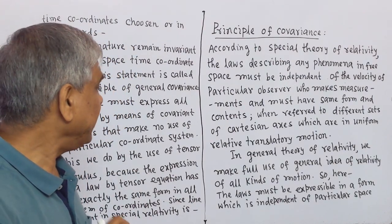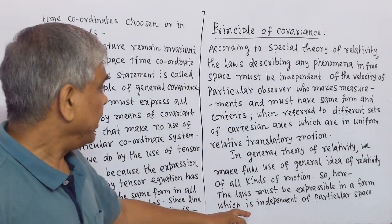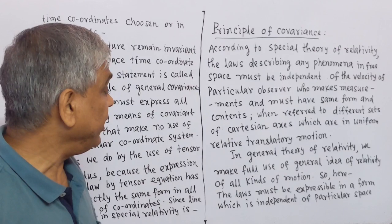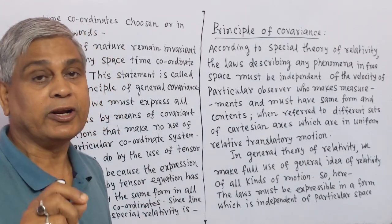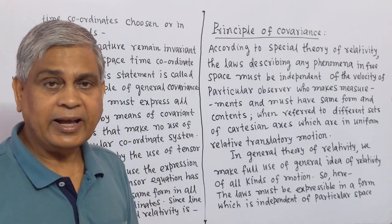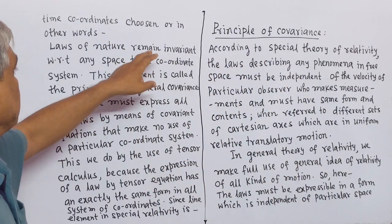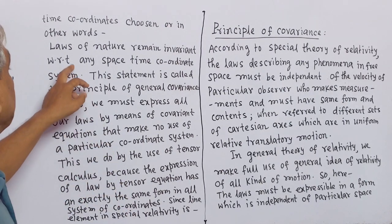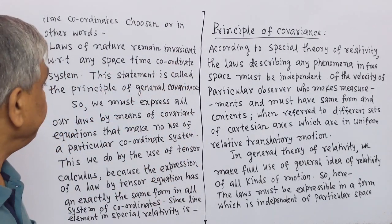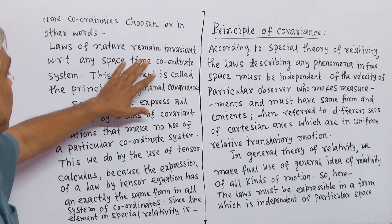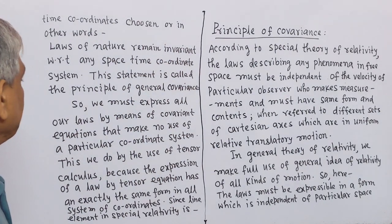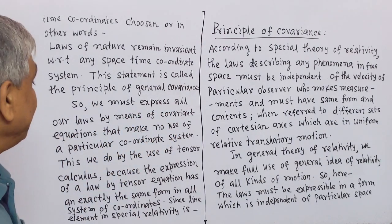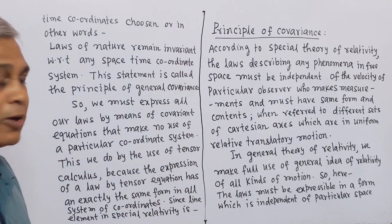Here we take all kinds of motion, and for all kinds of motion, the laws must be expressible in a form which is independent of the particular space-time coordinate system. The idea is broadened. In other words, laws of nature remain invariant with respect to any space-time coordinate system. This statement is called the Principle of General Covariance. We must express all our laws by means of covariant equations that make no use of a particular coordinate system.